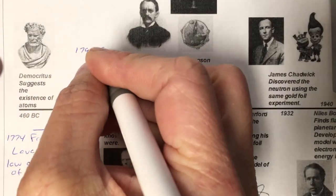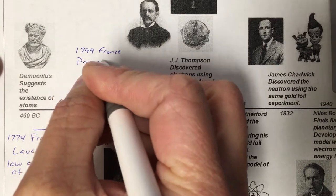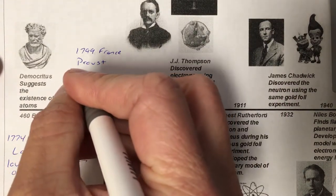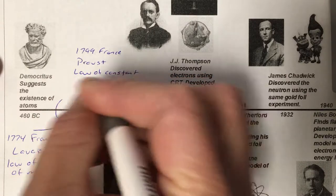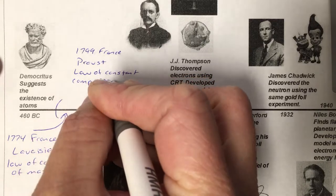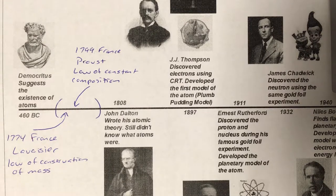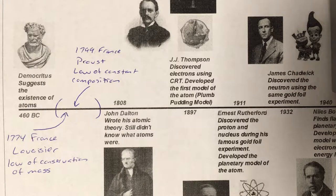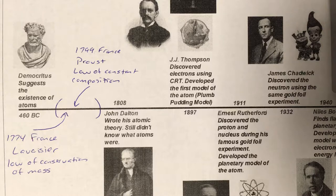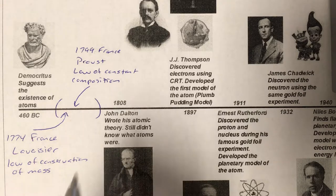In 1799, also in France, we have Proust, who writes the law of constant composition. He did chemical reactions on compounds and broke them back down into elements. He took carbon dioxide and broke it into carbon and oxygen; he took water and broke it into hydrogen and oxygen. He found that no matter where that carbon dioxide came from, it was always the same ratio of carbon to oxygen by mass. The percent composition was the same no matter where the water came from — that was Proust's contribution.